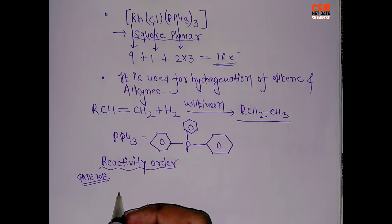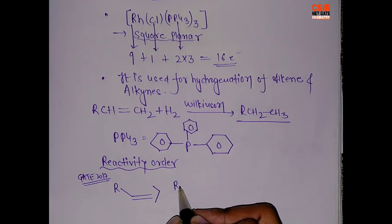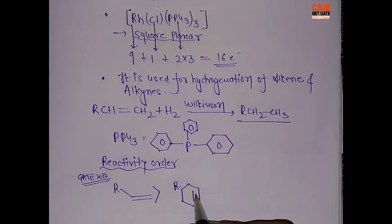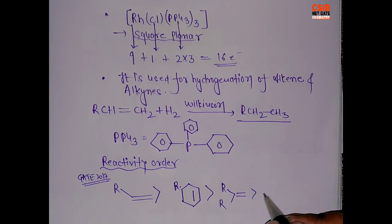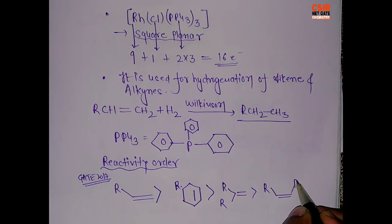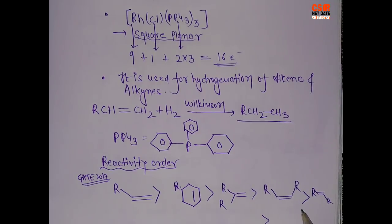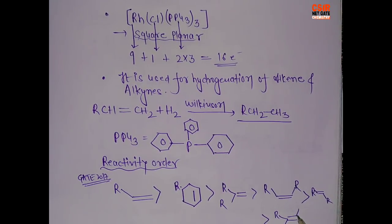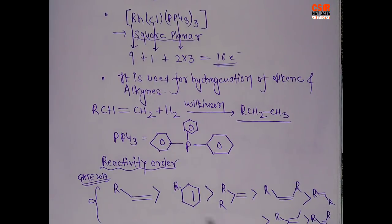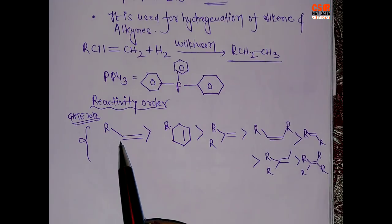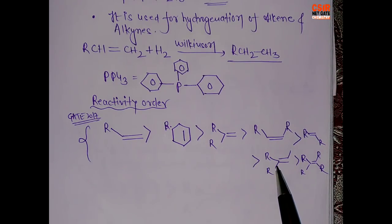The question about reactivity came in GATE 2017. So the reactivity order is: this alkene will be greater than this compound. This is the thing you have to remember, that this compound comes in between. R group on the same side will be greater than the cis, and greater than the trans. And this will be greater than this compound.